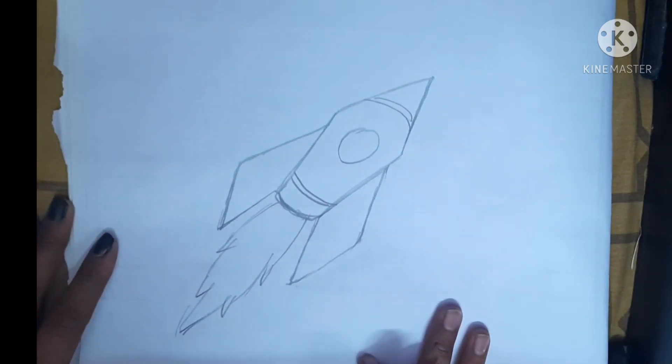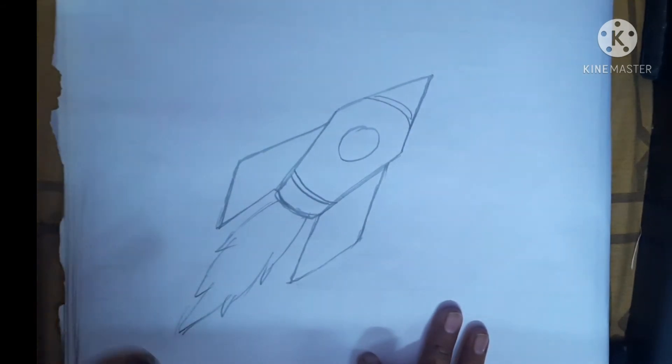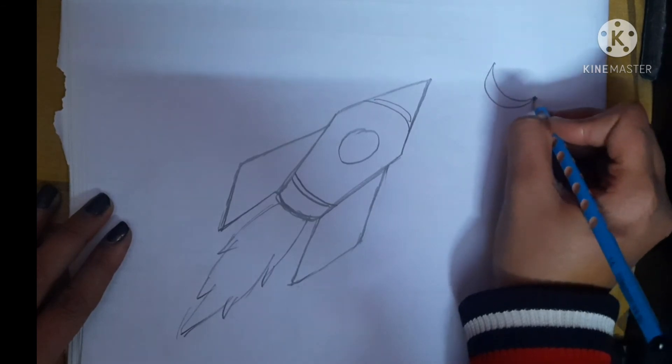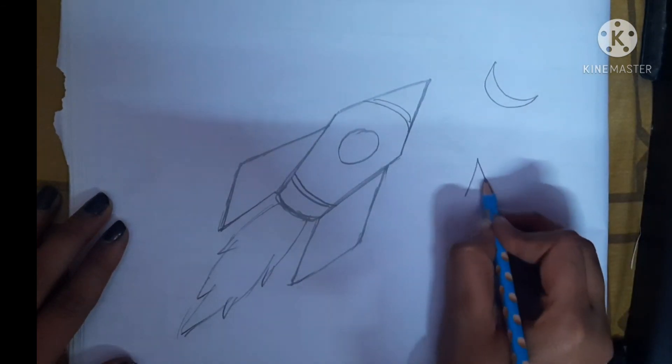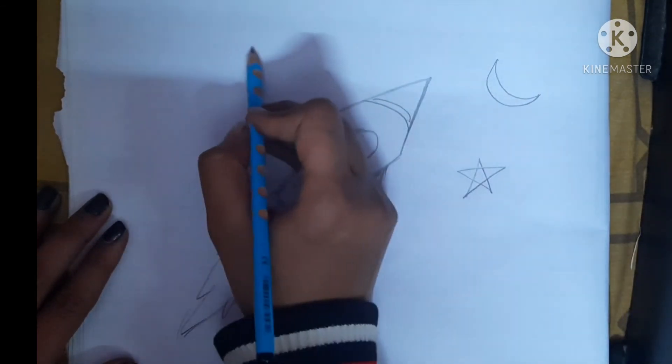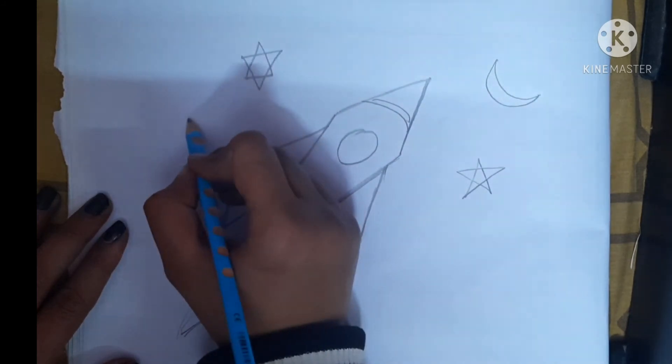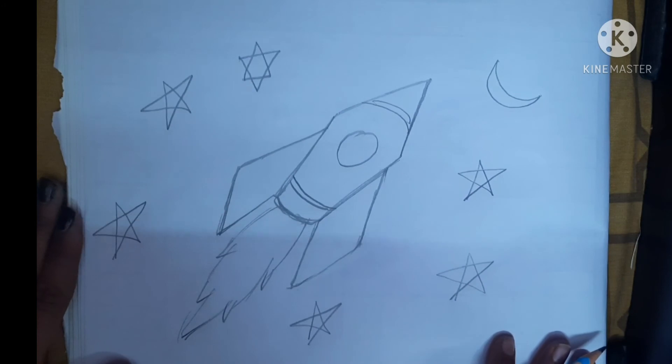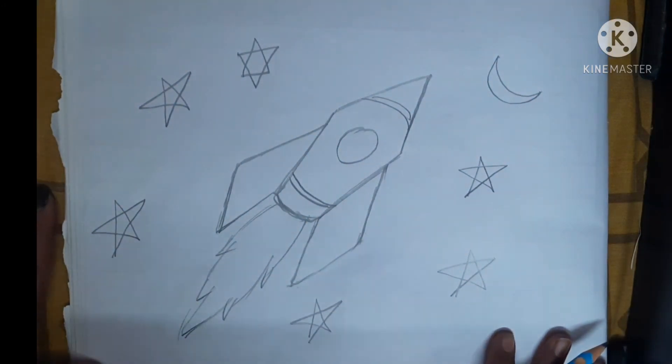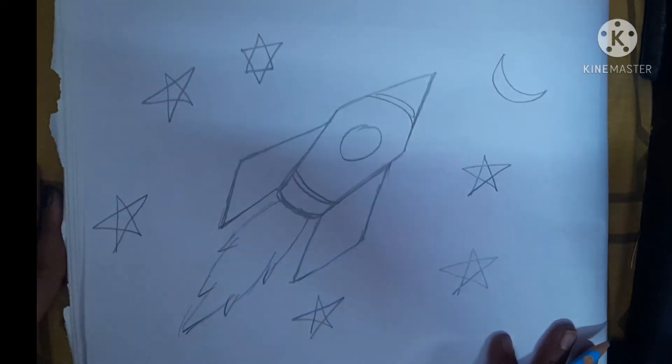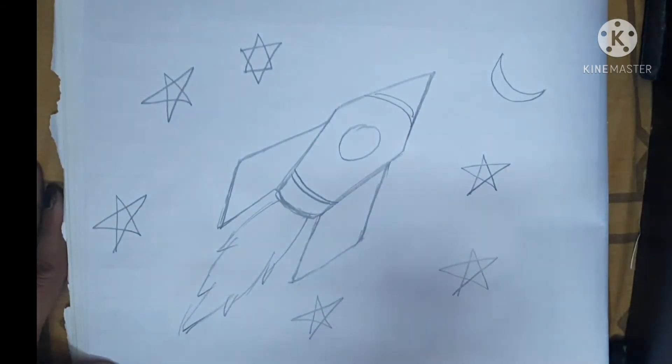Okay, so here our easy rocket is ready. Now here I'm going to make a small moon, a few stars. Okay, so here the rocket, the moon, the stars are ready. Make this drawing and color it at home students. See you, bye bye.